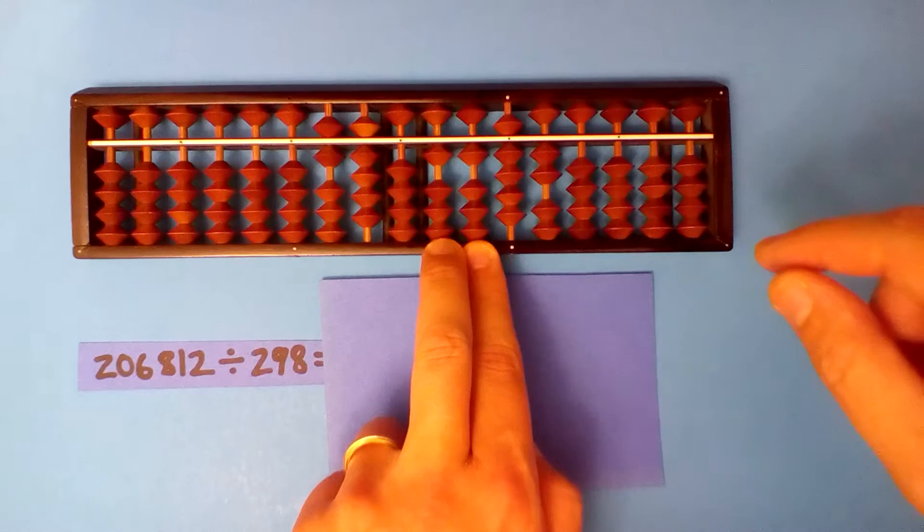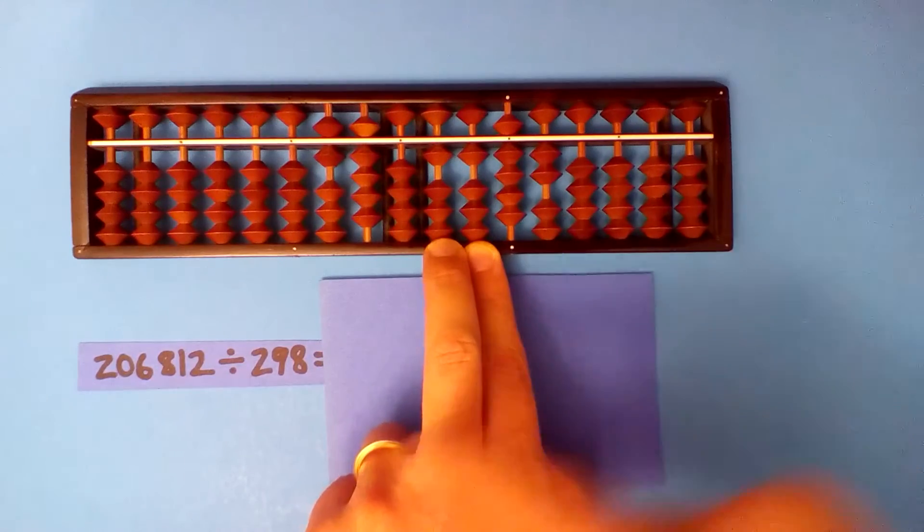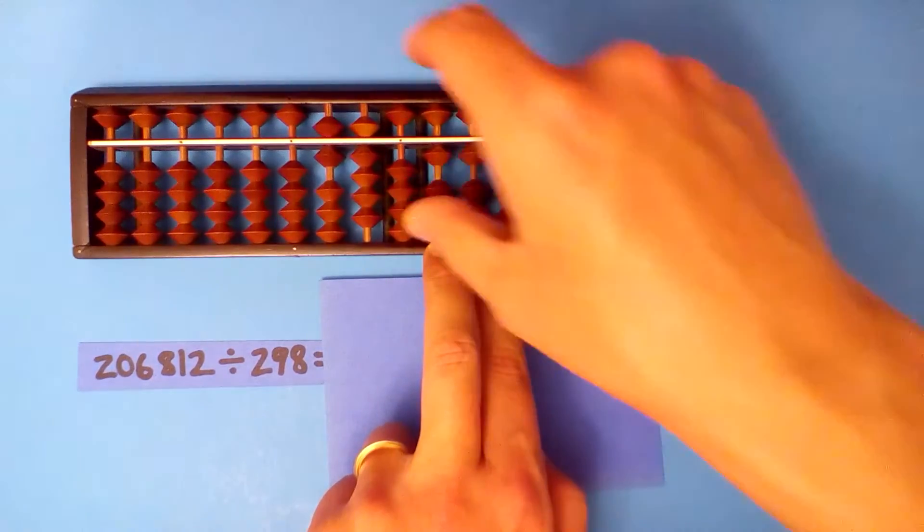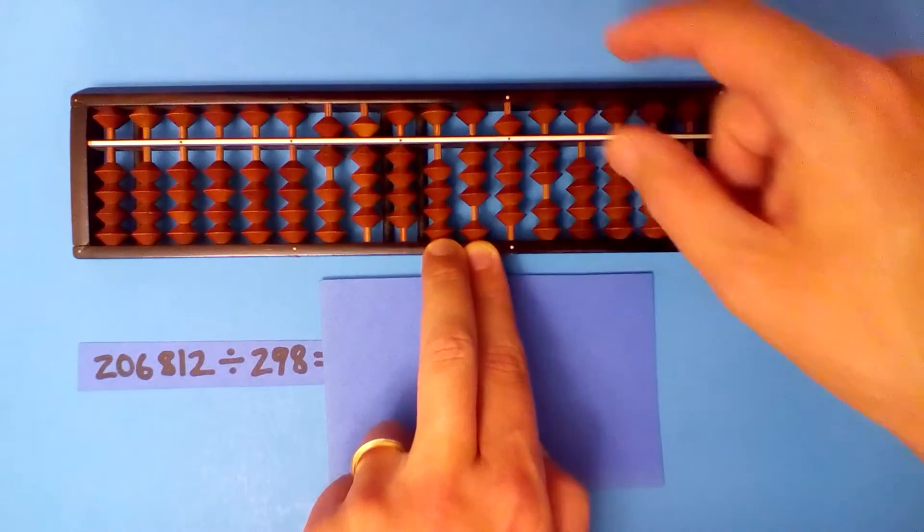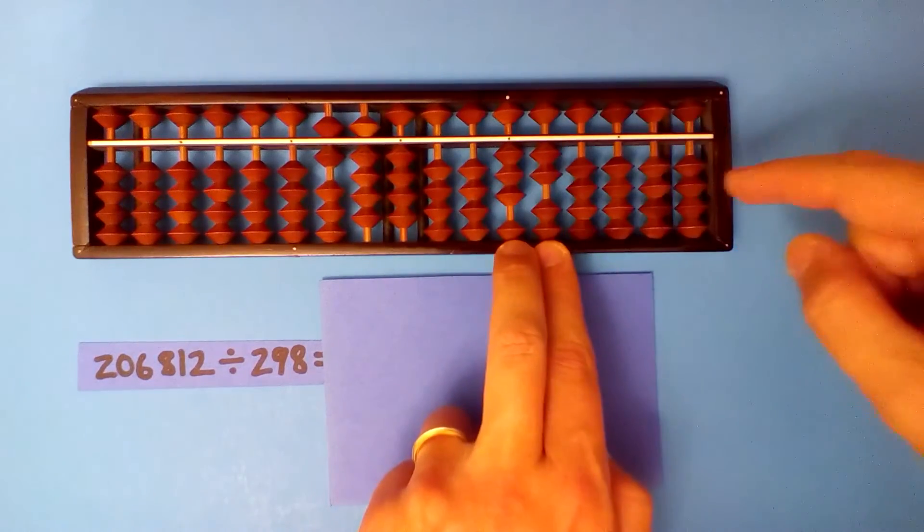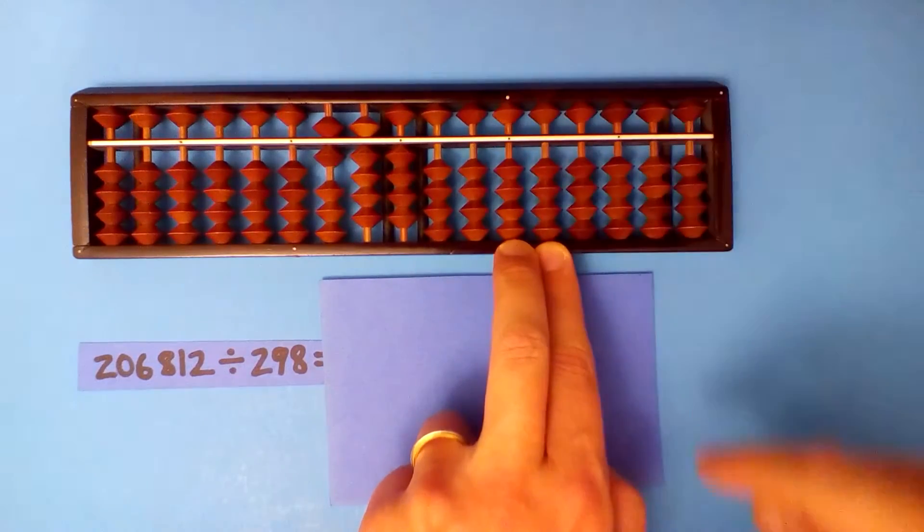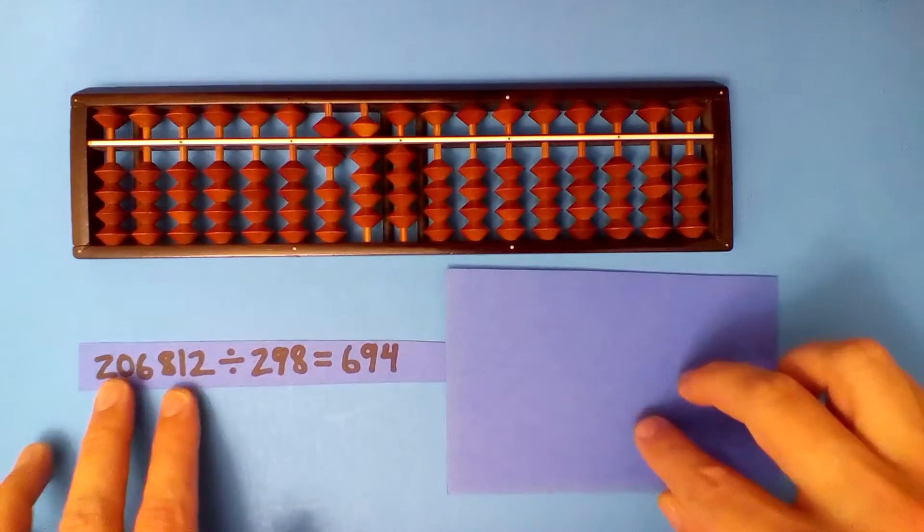Three into eleven. I think four times, this isn't quite three is it, and this is almost twelve, so four times. Four times two eight, four times nine thirty-six, four times eight thirty-two. And we're finished, our quotient 206.94.